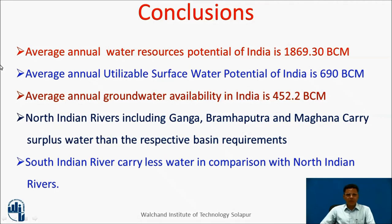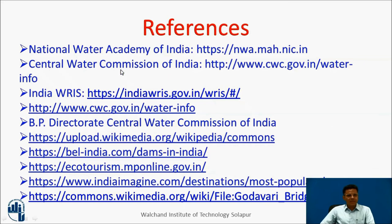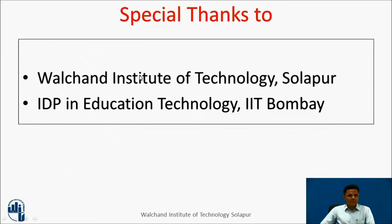To conclude: average annual water resources potential of India is 1869.3 billion cubic meters; average annual utilizable surface water potential is 690 billion cubic meters; average annual groundwater availability is 452.2 billion cubic meters. North Indian rivers including Ganga, Brahmaputra, and Meghna carry surplus water relative to their basin requirements, whereas South Indian rivers carry less water compared to North Indian rivers. These are the references used for this presentation. Special thanks to Valchand Institute of Technology, Sulapur, IDP in Education Technology, IIT Bombay. Thank you.